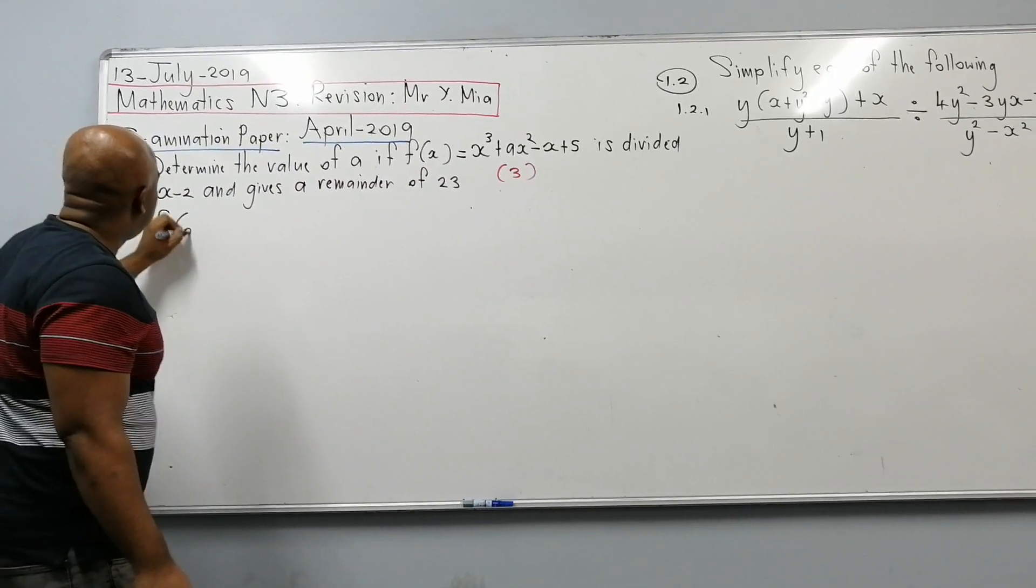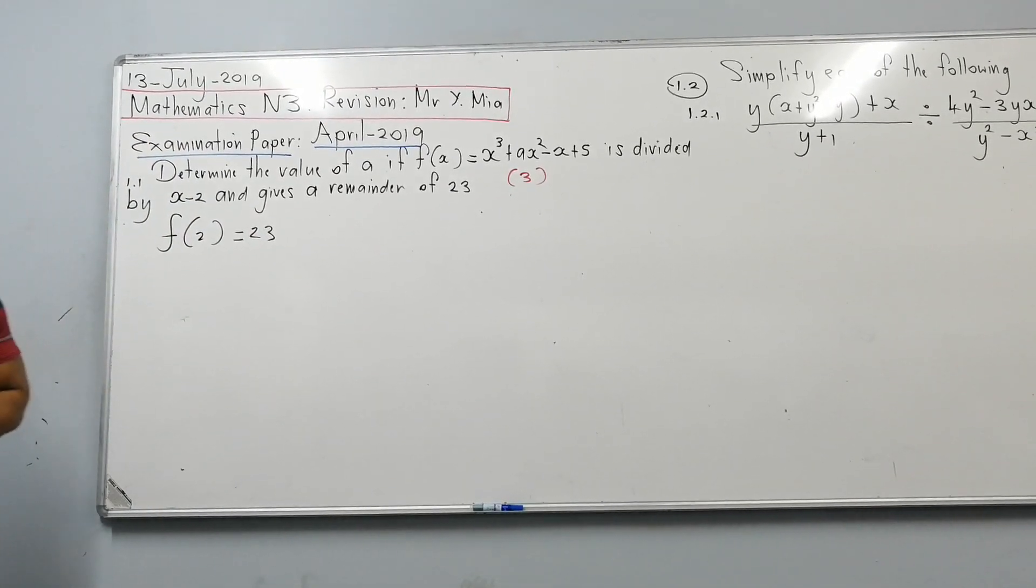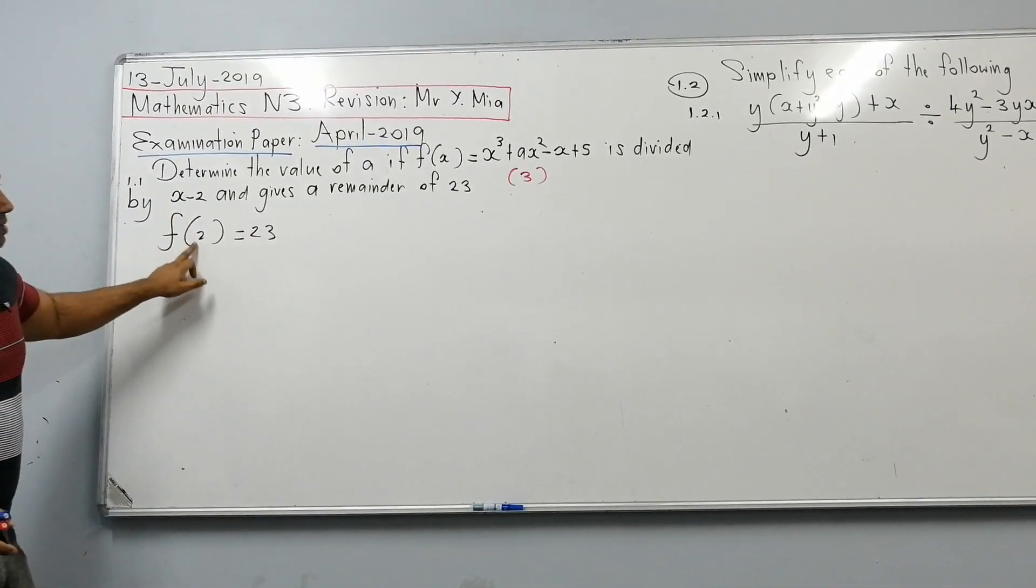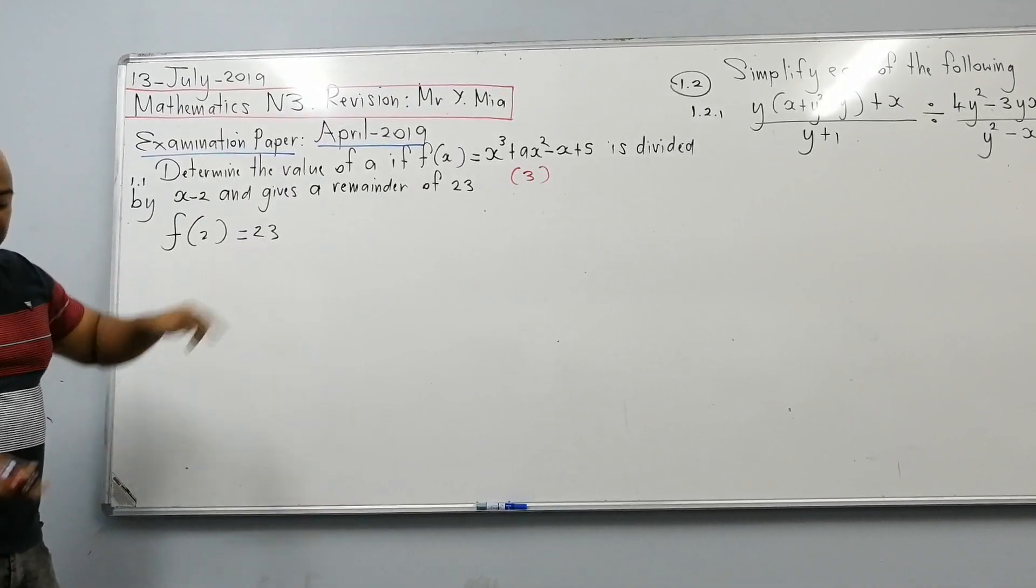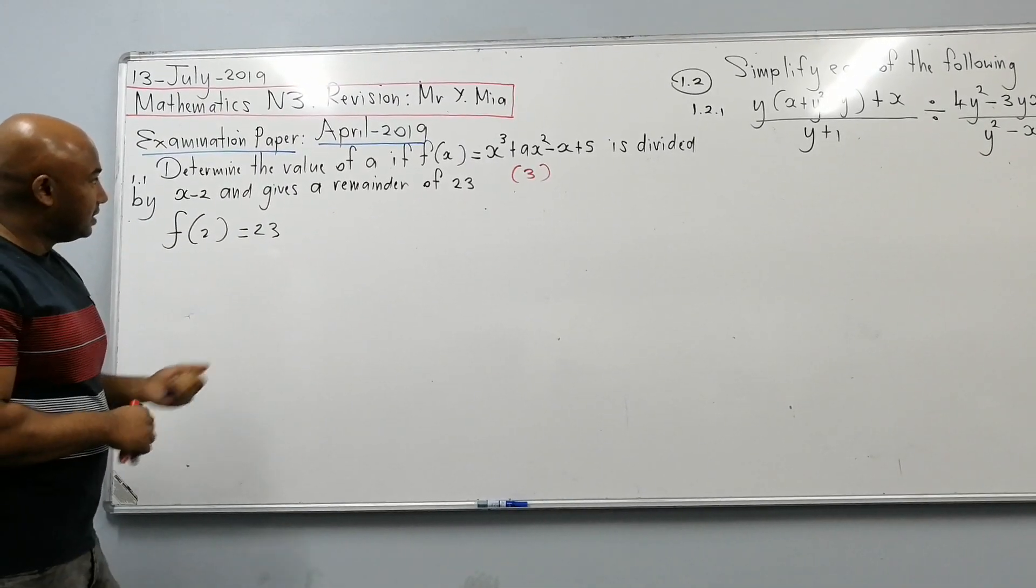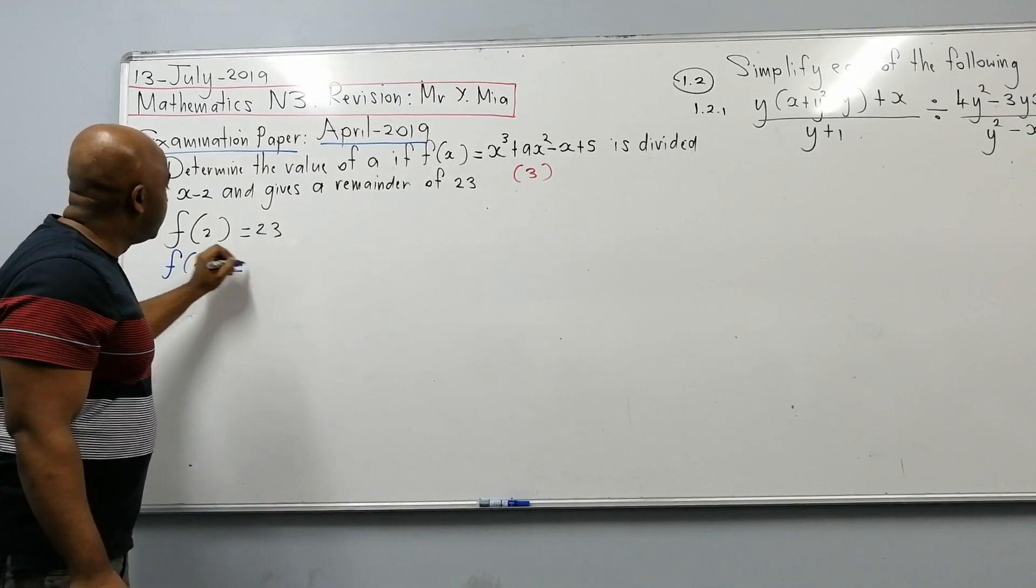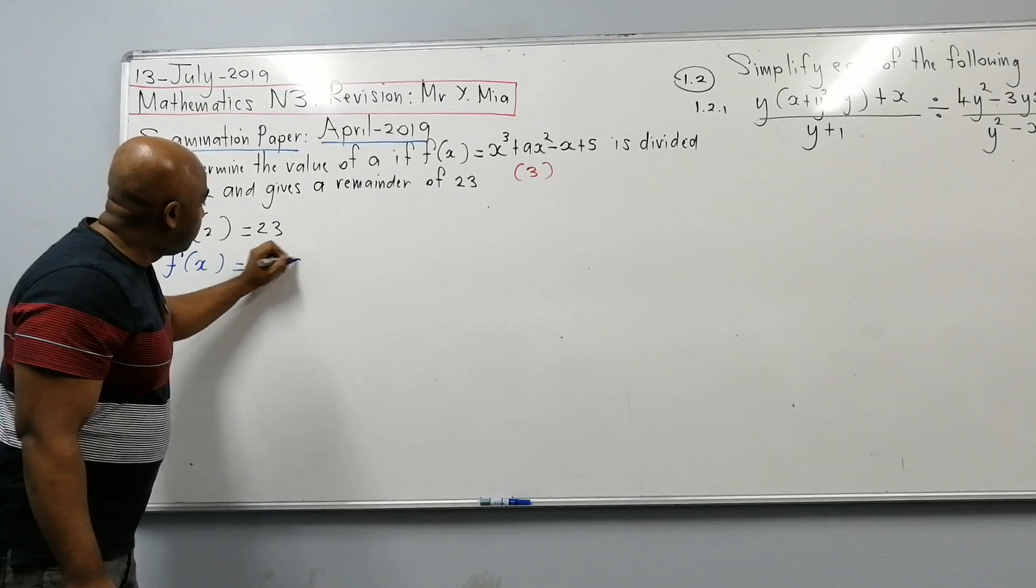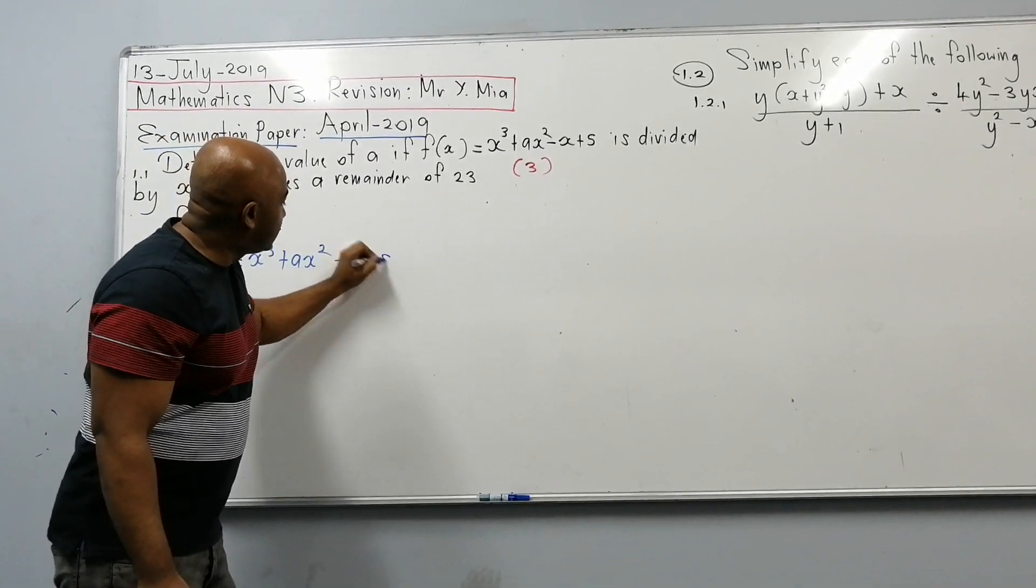So what it means is f of 2 is equal to 23. So we're going to go f of 2 equals to 23. That's what it means. When I substitute x into that equation, my remainder is 23.